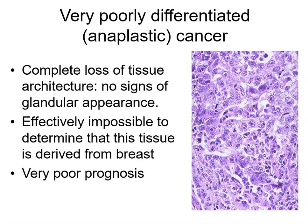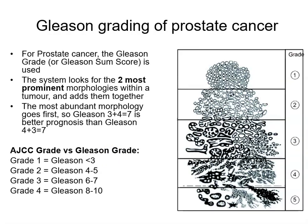An anaplastic breast cancer shows a mass of indistinct epithelial-like cells with no ductal structure whatsoever. Multiple mitoses are clearly visible, and individual cells look completely different from each other, scoring three for nuclear pleomorphism. With a complete absence of ducts this scores three for tubules as well, giving a Nottingham score of eight or nine, indicating a very poorly differentiated cancer with a very poor prognosis.